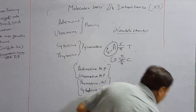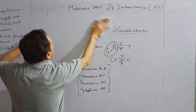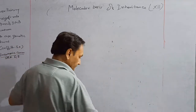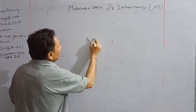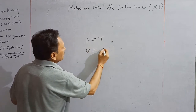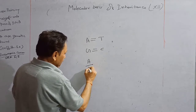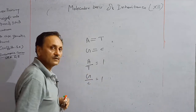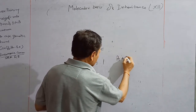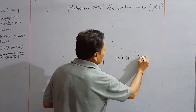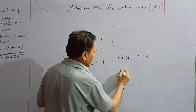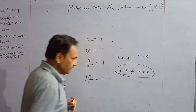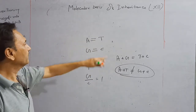Chargaff proposed a particular rule for double-stranded DNA. According to Chargaff's rule, A is always equal to T, and G is always equal to C. Therefore A/T equals 1 and G/C equals 1. This means the number of A plus G is always equal to the number of T plus C. However, it is not essential that A plus G equals T plus C — it may not be equal. This was proposed by Chargaff.